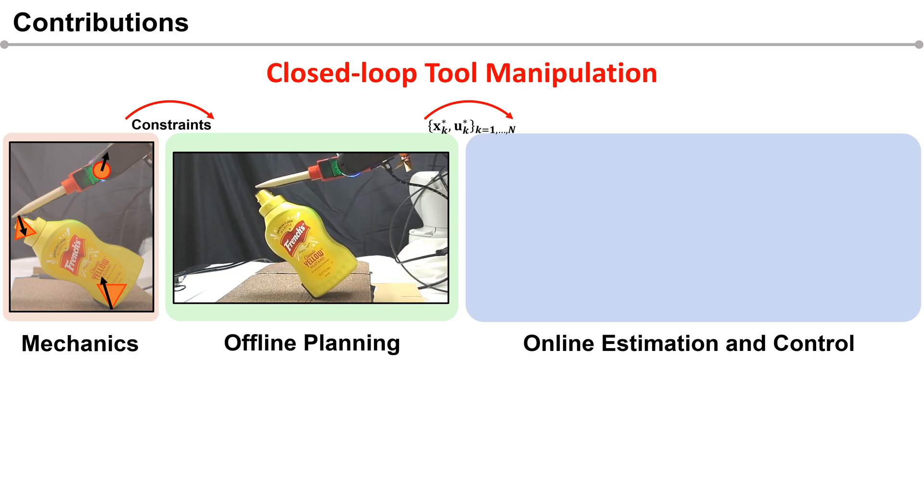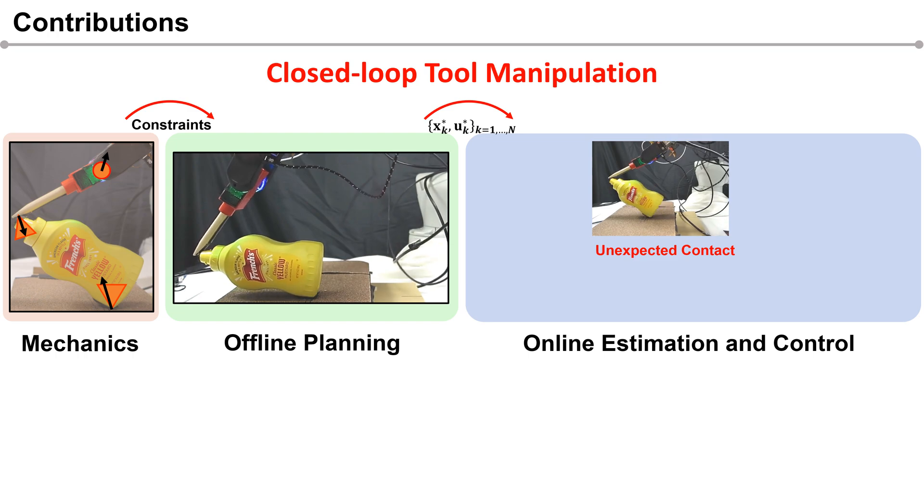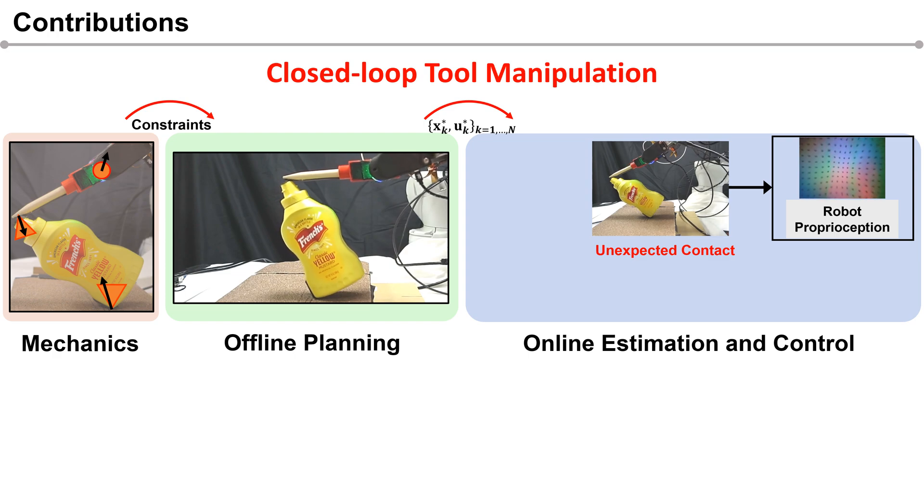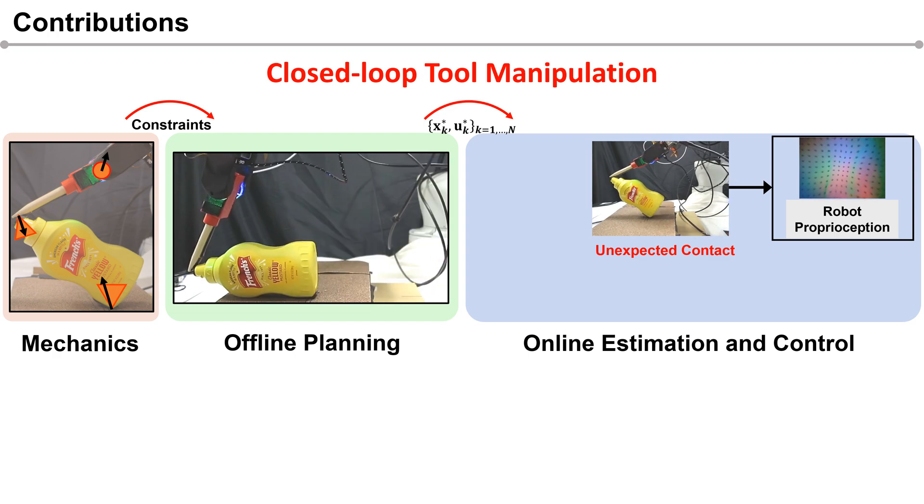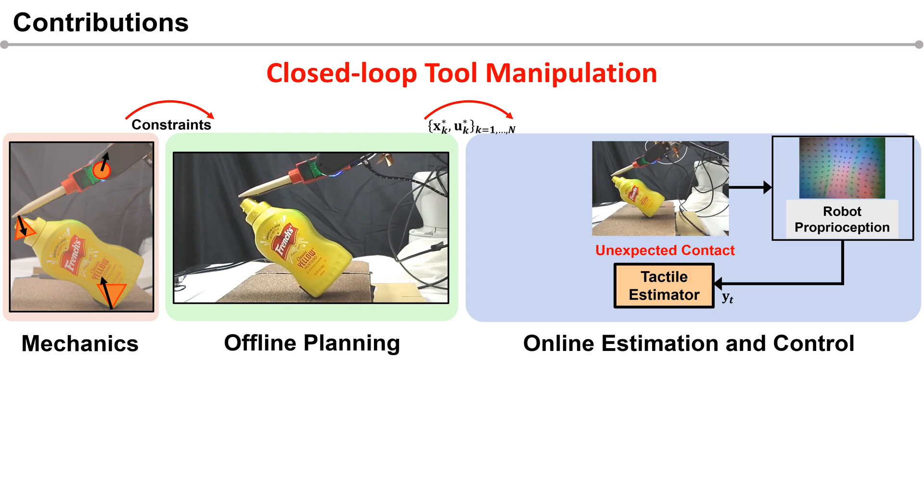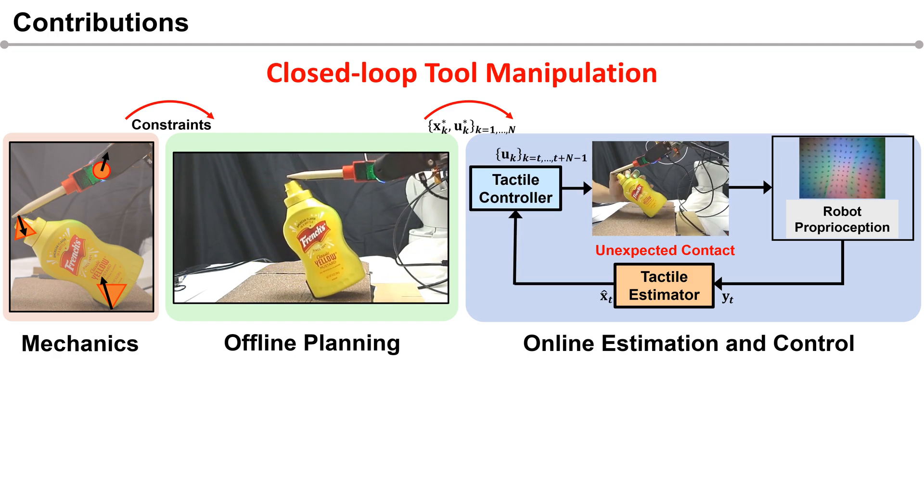We use an online estimation and control framework for tool manipulation. Our proposed framework makes use of tactile sensors to estimate pose of the object in events of unexpected disturbances. We use this estimate to run MPC-based controller to control the manipulation in closed loop.